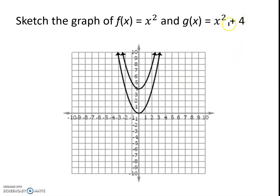When we have a number like this, just on the outside of x squared, which just is a vertical move on the y-axis, so it goes up 4, and it's the exact same-looking graph as x squared.